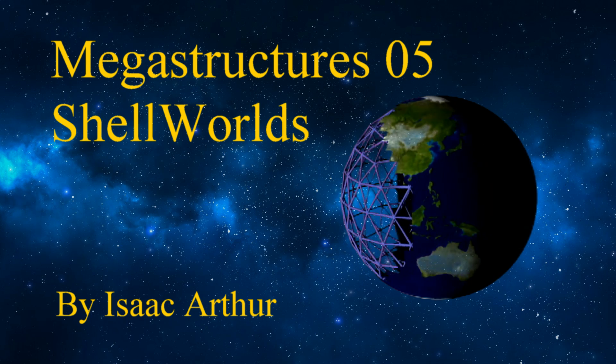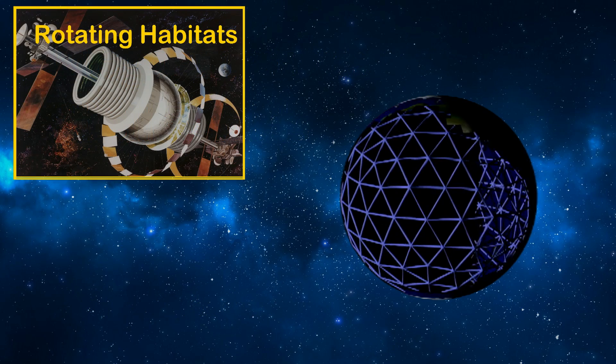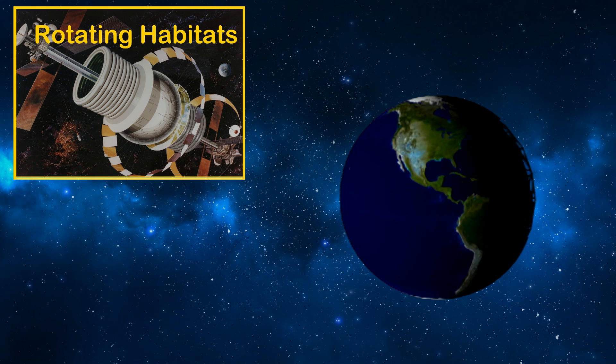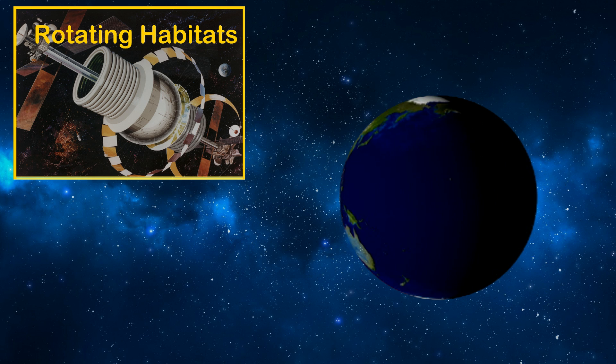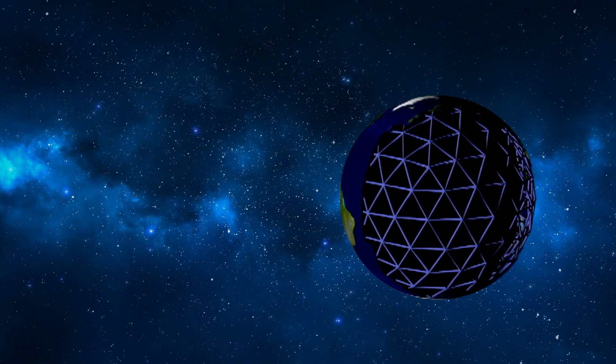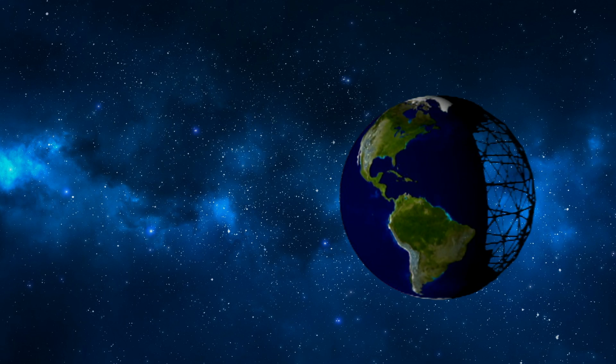Last time in the Megastructures series we looked at building artificial worlds whose gravity was supplied by rotating them. Today we're going to be looking at building ones which have their gravity supplied normally, by sheer mass.